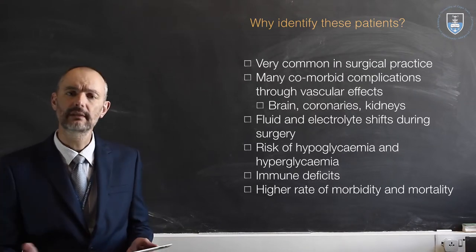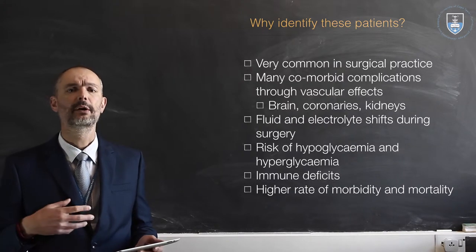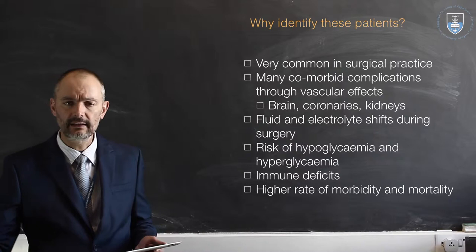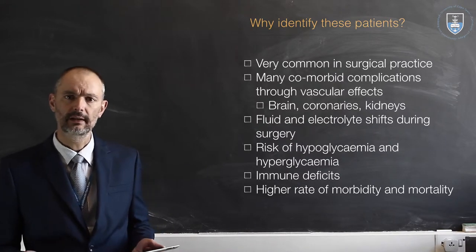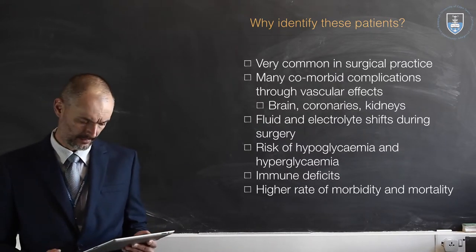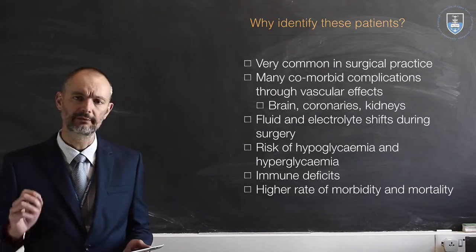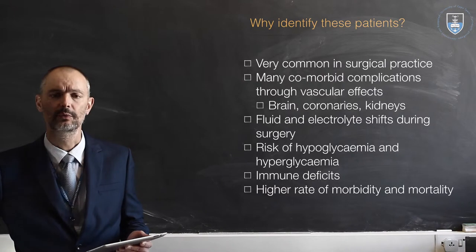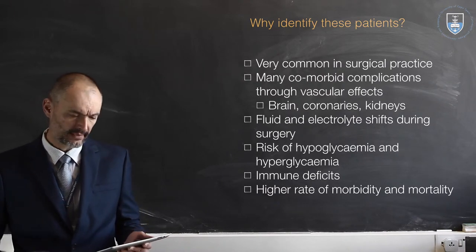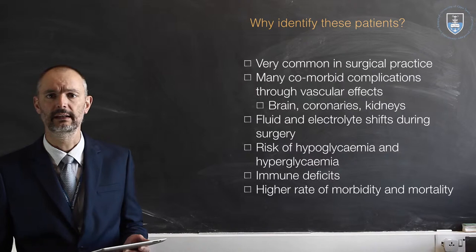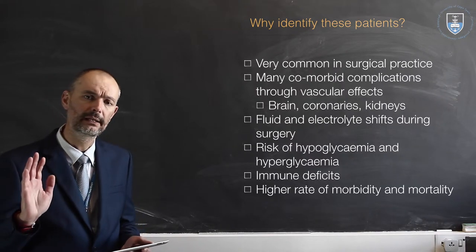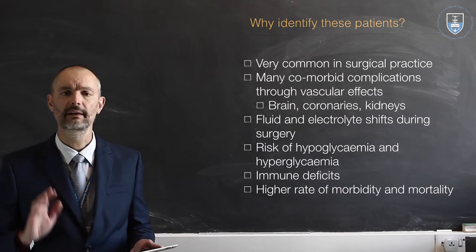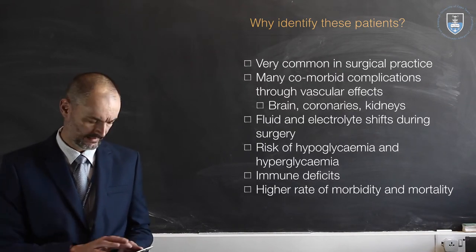These patients have immune deficits. They have polymorphonuclear cell abnormalities — they don't attract these cells appropriately to areas where they are needed. They have phagocytic problems as well, and that will definitely lead to a higher incidence of post-operative septic complications and wound sepsis. They have poorer healing rates, which might be important when you do an anastomosis, and they overall have a higher rate of morbidity and mortality.